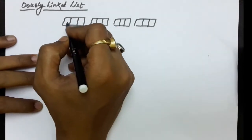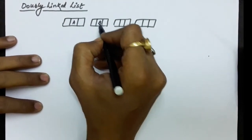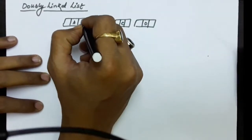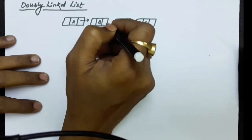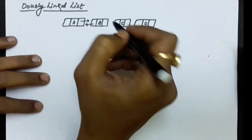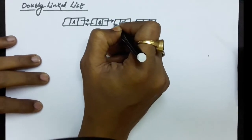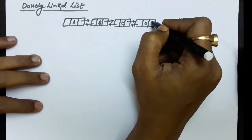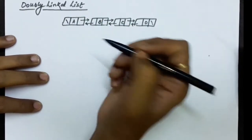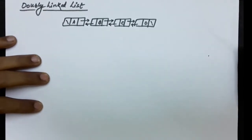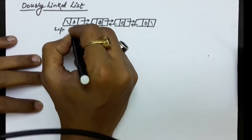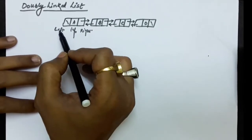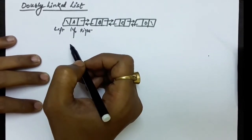The doubly linked list nodes contain three fields. One field contains the information. There is also a field containing the address of the right node and a field containing the address of the left node. Since there is no right node after the last node, that field is null, and there is no left node before the first node, so that field is also null. So there are two address fields and one information field in doubly linked list nodes.